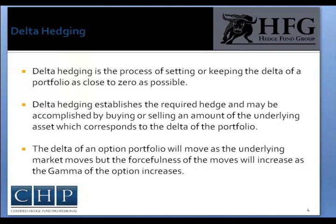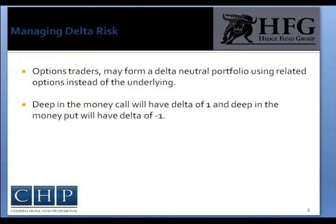Option traders may form a Delta neutral portfolio by using options instead of the underlying price to hedge a portfolio. This method can be used when the underlying asset is difficult to trade. For instance, when an underlying stock is hard to borrow and a trader cannot short it, they might need to use options to hedge their portfolio. One example of a Delta neutral strategy is buying deep-in-the-money calls or buying deep-in-the-money puts to hedge the Delta of a portfolio.